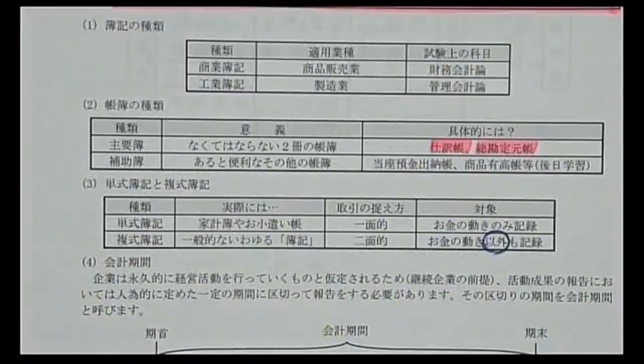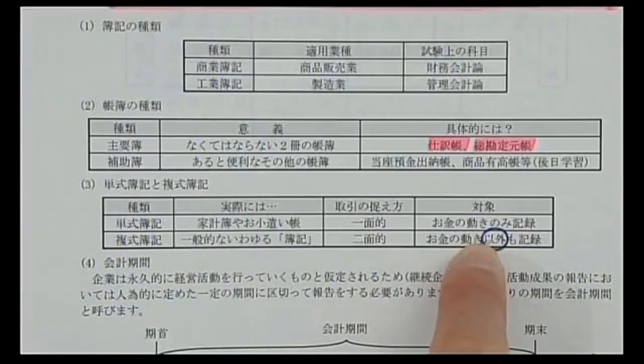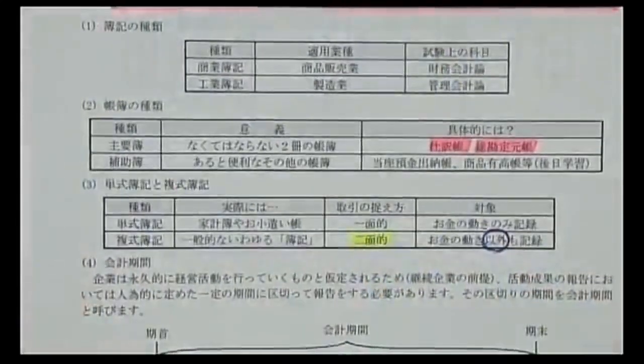家計簿は10万円減ったという点に主軸を置きます。複式簿記はお金の動き以外についても同レベルに着目する点が違います。これが複式簿記の特徴で、取引を二面的に捉えることです。